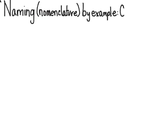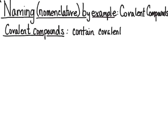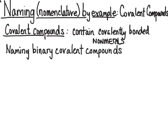Welcome to the uChem tutorial on naming by example for covalent compounds. We're going to go over the nomenclature or naming of covalent compounds in this video. Covalent compounds contain covalently bonded non-metals that share electrons between them to form a larger molecule. We're going to be naming binary covalent compounds, or covalent compounds that contain two types of non-metals within them.